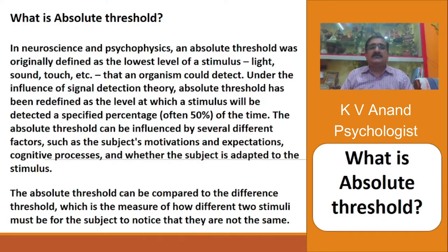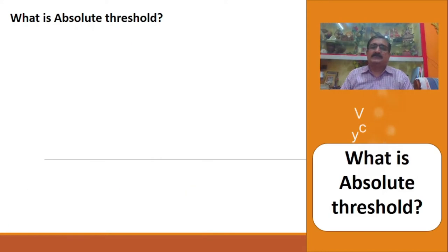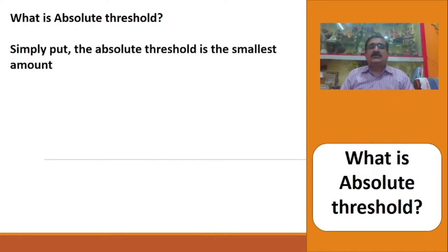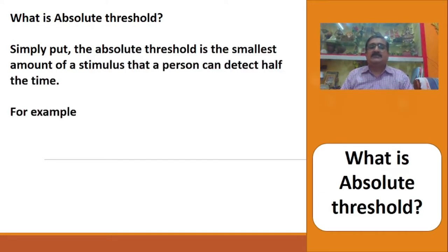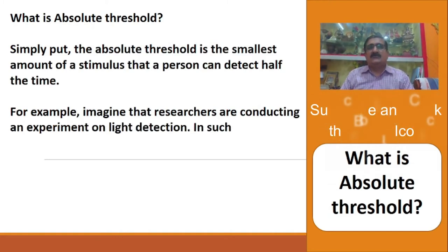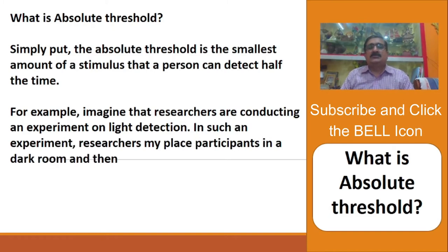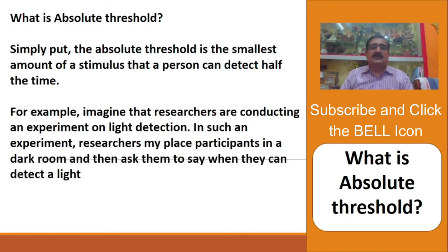This absolute threshold definition is in the case of neuroscience and psychophysics. Simply put, the absolute threshold is the smallest amount of a stimulus that a person can detect half the time. If the person is observing for one hour, the person should be able to detect the stimulus for at least 30 minutes of the time.